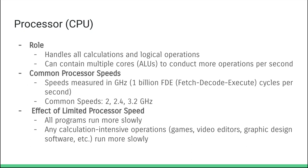The processor handles all calculations and logical operations. When you click a button in a program, your decision is sent to RAM, and from RAM the command is sent to the CPU for processing and execution. A processor can contain multiple cores — if you've seen a dual-core or multi-core processor, that refers to the number of ALUs in that processor. This allows program execution to happen in parallel, increasing the number of operations per second and making the computer much faster.